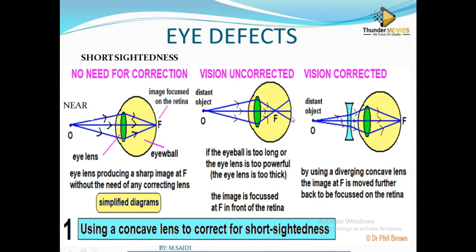The lens is too powerful — it bends the light too much so that it does not reach the retina. The eye lens is too thick and more convex, so the image is focused in front of the retina. To summarize: the eyeball is too long, the lens is too powerful, too thick, too convex, and the image is formed in front of the retina.